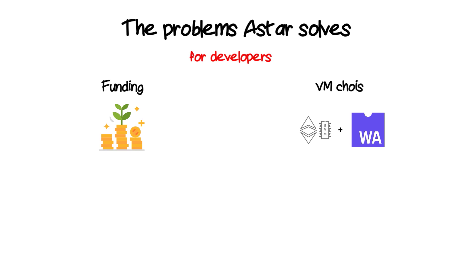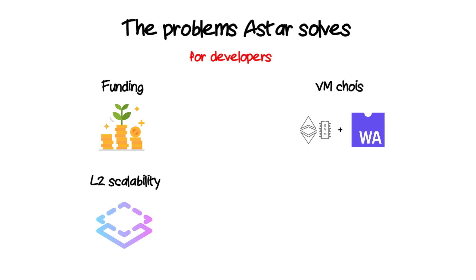Regarding layer-two solutions: since Polkadot is already a solution for scalability, L2 solutions will most likely not be in full demand at the initial stages of ecosystem development. However, this question will arise at later stages when the ecosystem has tens of thousands of dApps and millions of users. Astar is ready for ecosystem growth and offers second-layer scalability solutions such as ZK rollups and optimistic rollups.